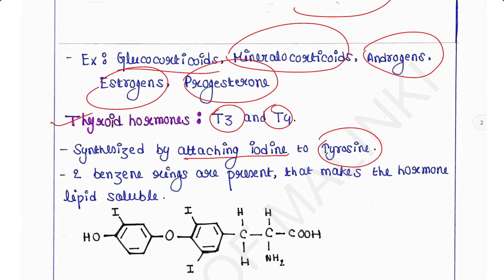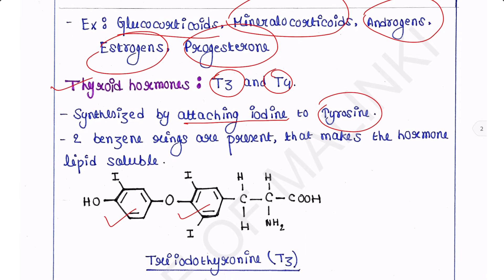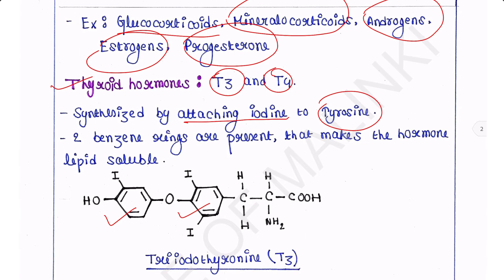Thyroid hormones are derived from the amino acid tyrosine. The presence of two benzene rings within a T3 or T4 molecule makes these molecules very lipid-soluble. This is benzene ring 1, and this is benzene ring 2, in both T3 and T4.